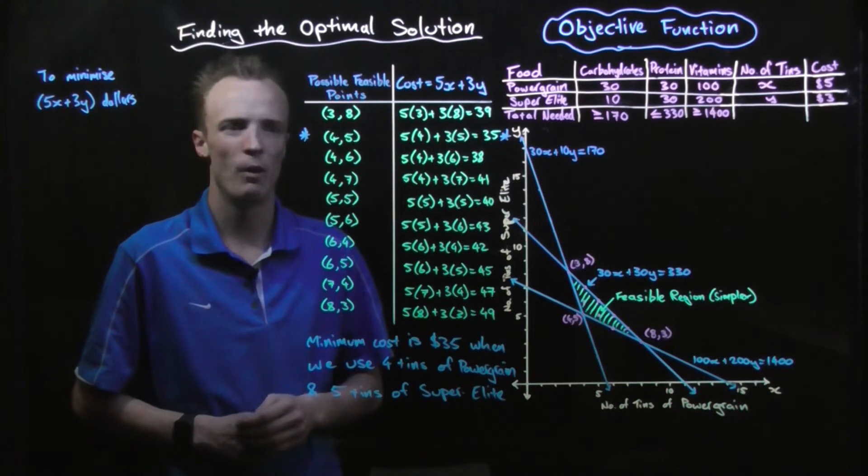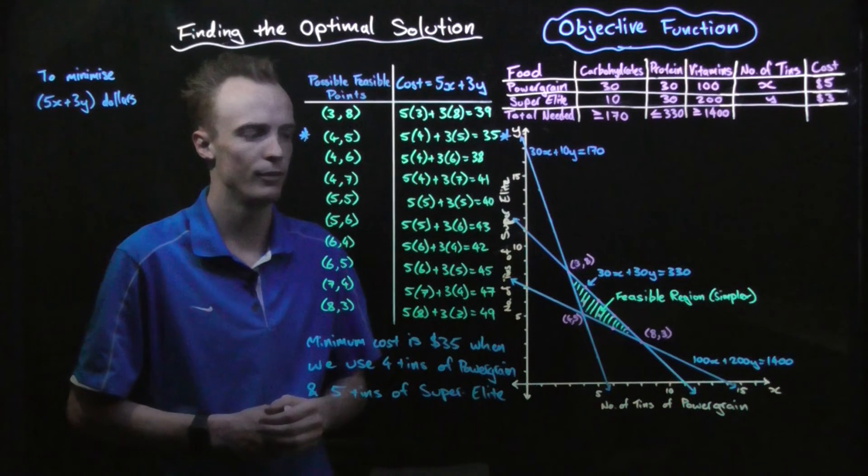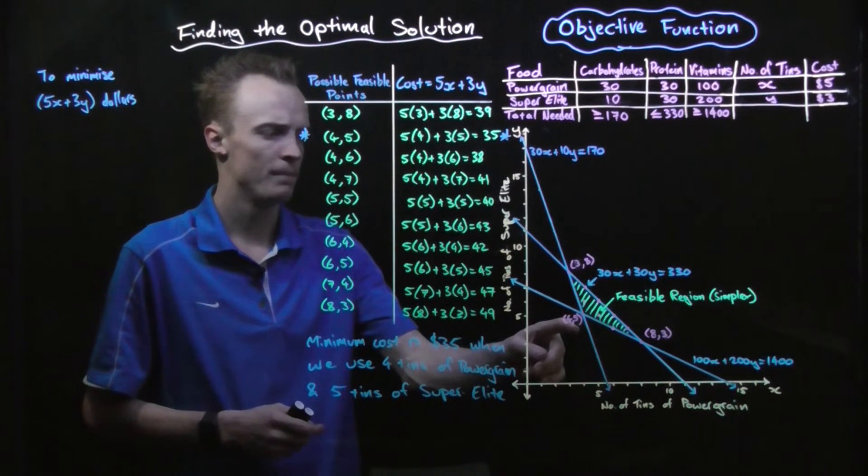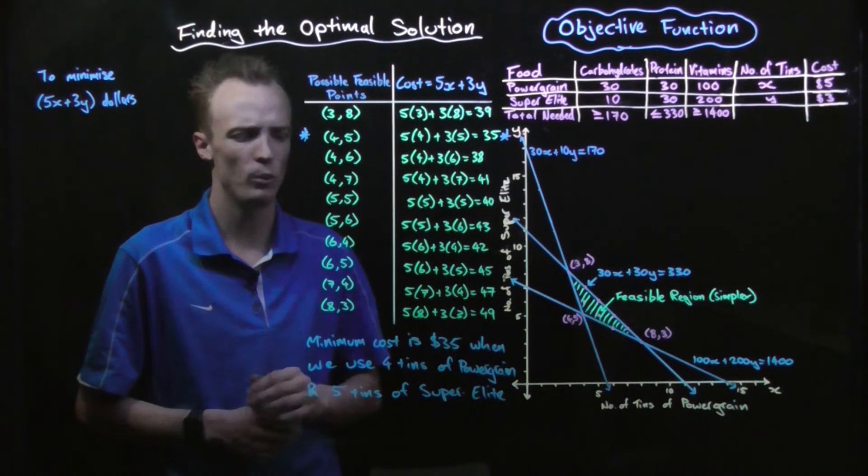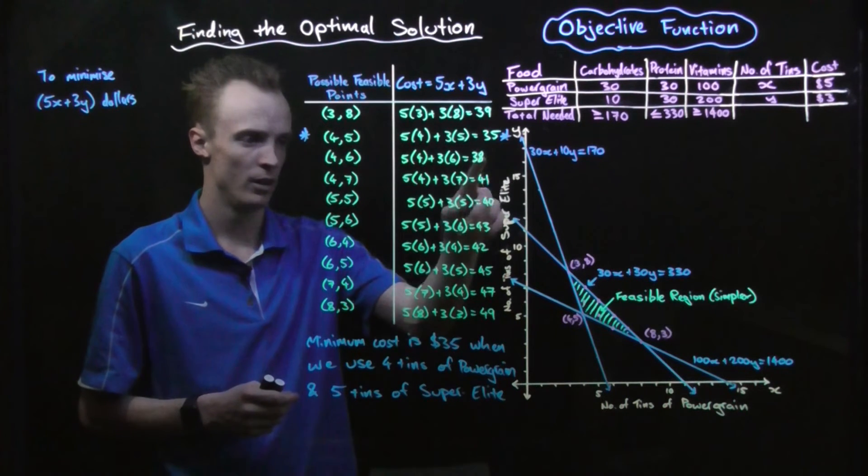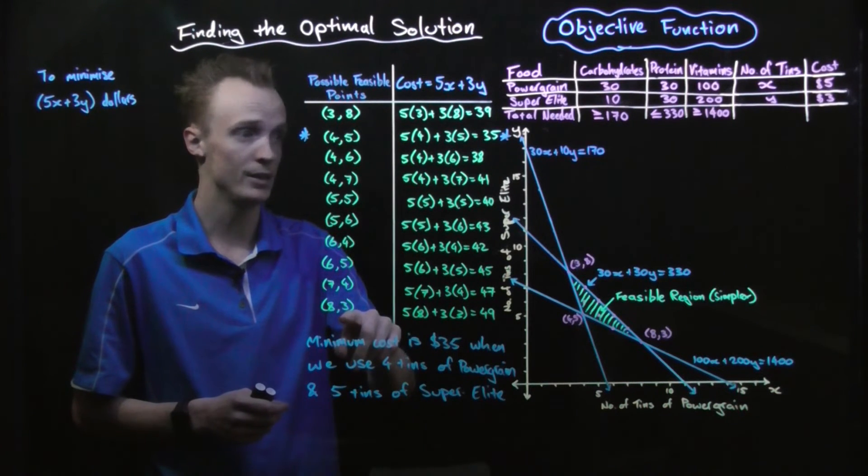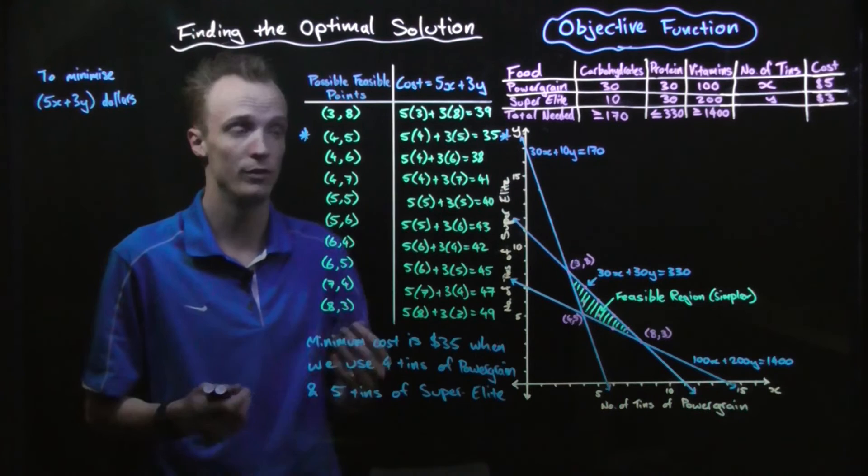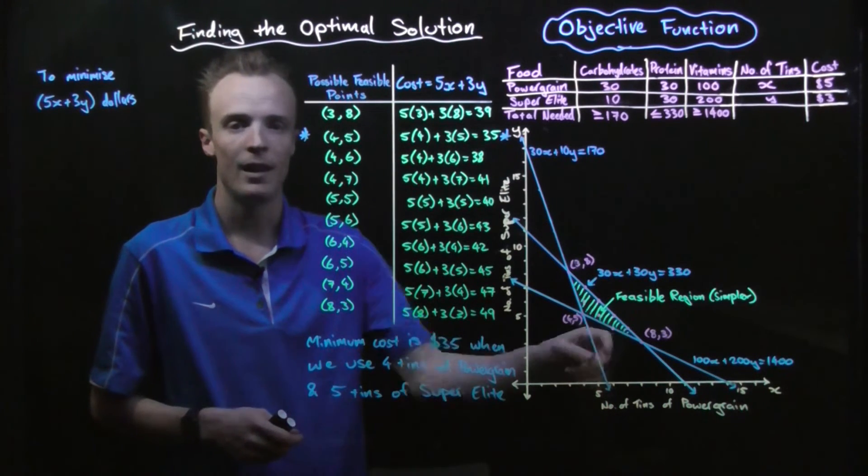Let's for a moment take a look at where our minimum value occurred in our graph. It's right here at a vertex. Let's have a look at where our maximum value occurred, which was at $49. That was eight cans of power grain, three cans of super elite. That occurred here at a vertex.